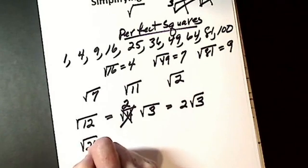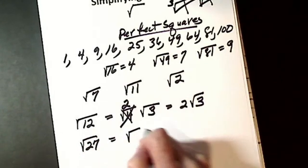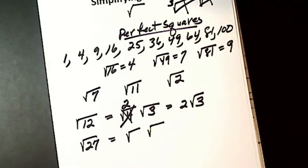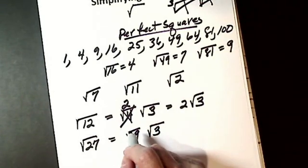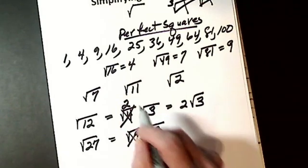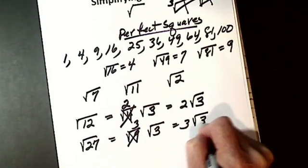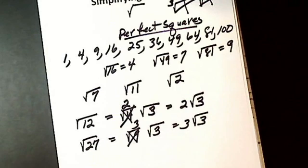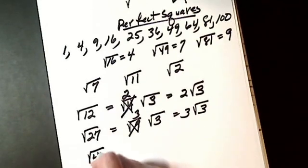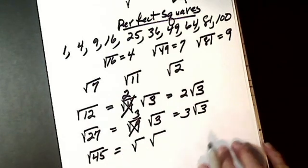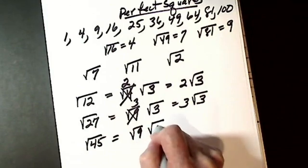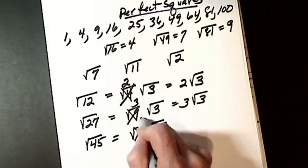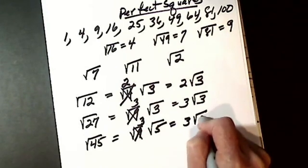Let's say I have the square root of 27. I want to break it down into two numbers that multiply together and give me 27, where one is a perfect square. So it's got to be 9 and 3. I take the square root of 9 — when you take the square root, it comes out of the square root sign. So my answer is 3 the square root of 3. Make sure you don't leave this under the square root sign. Now the square root of 45: it's got to be 9 and 5. I take the square root of 9, which is 3. I get 3 the square root of 5.